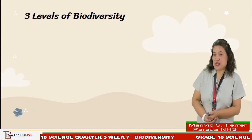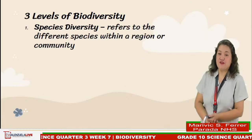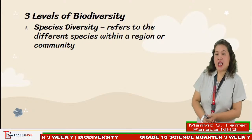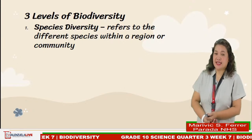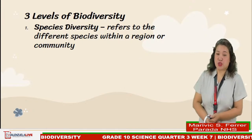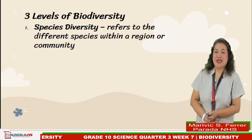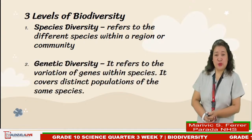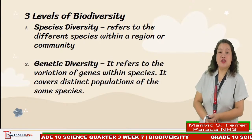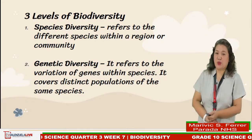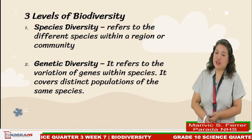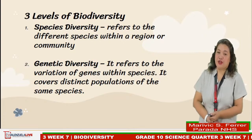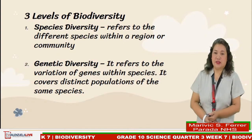There are three levels at which biodiversity has been identified. One: species diversity. It refers to the different species within a region or community — the number of species. The number of species in a regional community possesses genetic variation and distribution. Many species live on land rather than in the sea. Two: genetic diversity. It refers to the variation of genes within species, covering different populations of the same species. For example, different varieties of fungi, wheat, and roots.